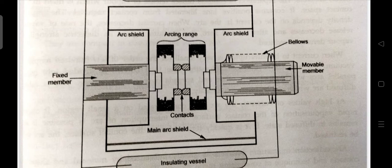However, the arc is quickly extinguished because the metallic vapors, electrons and ions produced during arc rapidly condense on the surface of the circuit breaker contacts resulting in quick recovery of dielectric strength. The salient feature of vacuum as an arc quenching medium is as soon as the arc is produced in vacuum, it is quickly extinguished due to the fast rate of recovery of dielectric strength in vacuum.